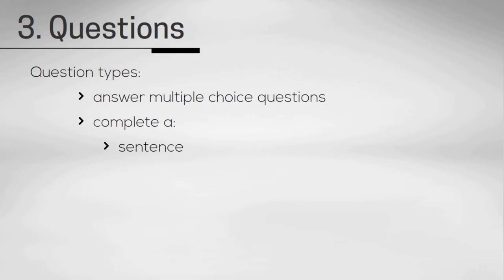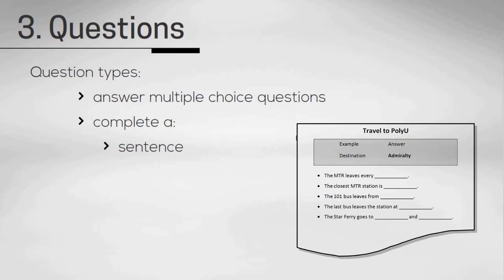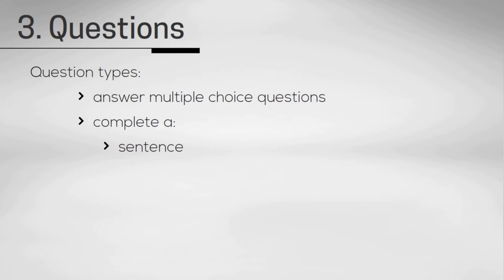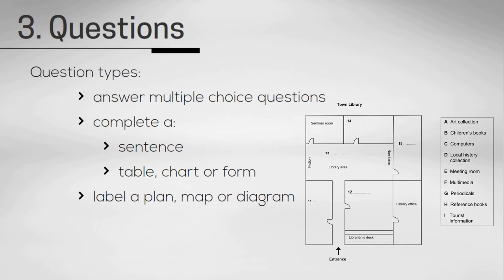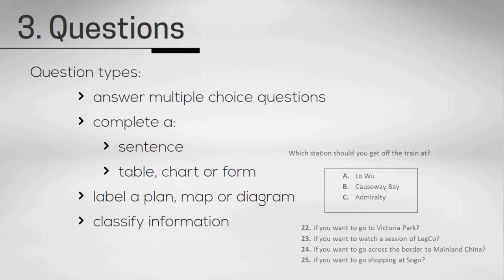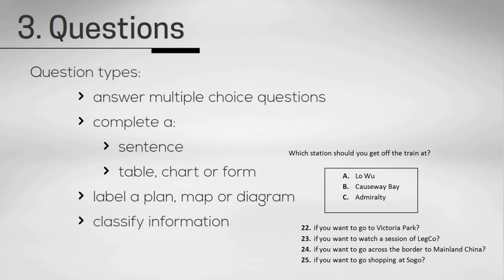In another type, they will give you a sentence and you have to complete the last few words. They may give you a table with some information missing, which you have to complete. There could be a plan of a room and you have to label the items within the room. You could be given sets of words and you have to classify them according to what people say. Or it could be a matching exercise. You won't get all of these tasks, but you will get some of them.